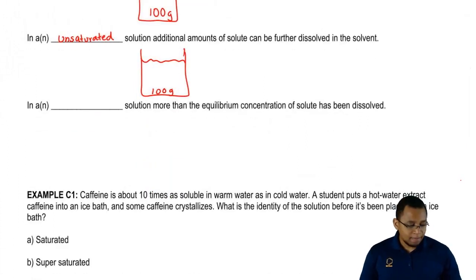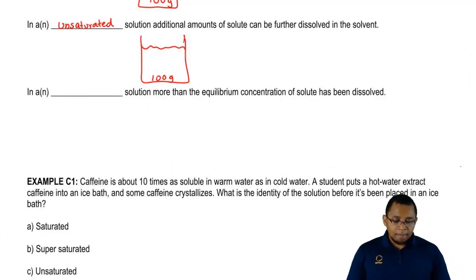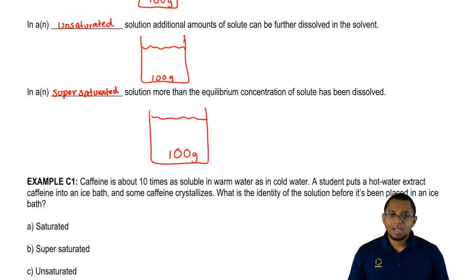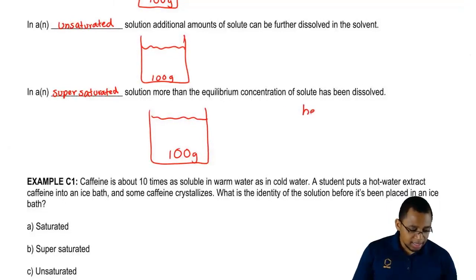Finally, our last type: in a supersaturated solution, more than the equilibrium concentration of solute has been dissolved. I have my bucket of water, and even though it's supposed to only dissolve 100 grams, I somehow get it to dissolve those extra 2 grams. This solution is supersaturated—it's gone beyond its limit. How do we accomplish this? You'd have to apply heat. Heat is needed to do this.